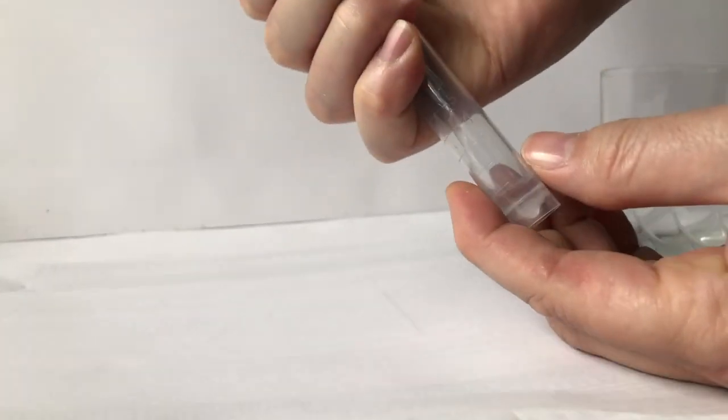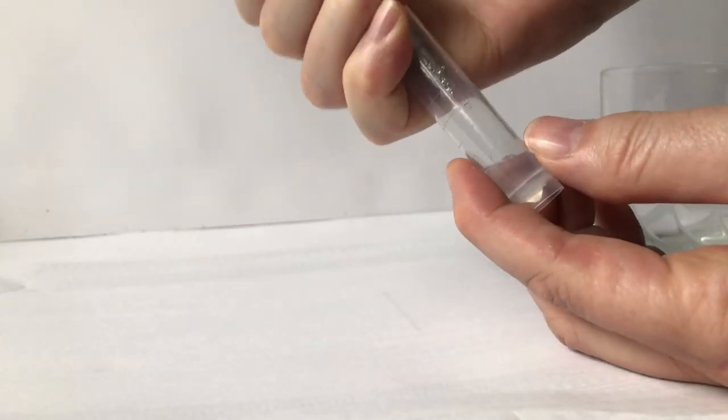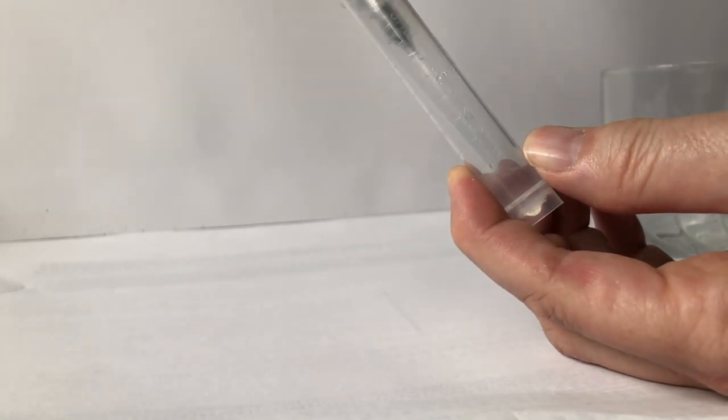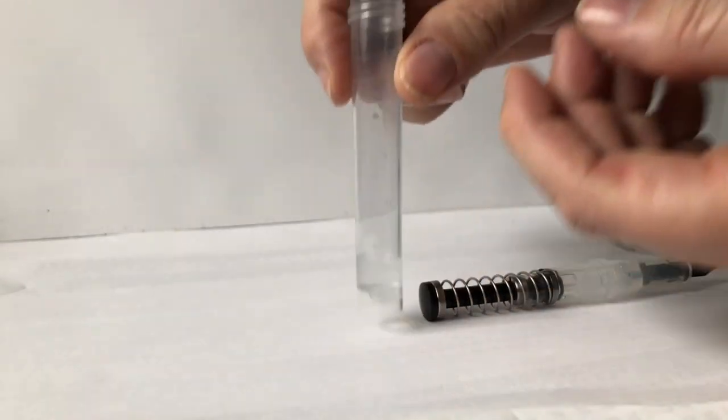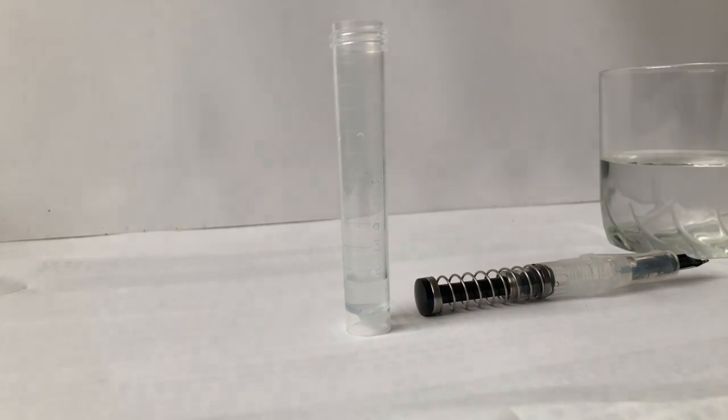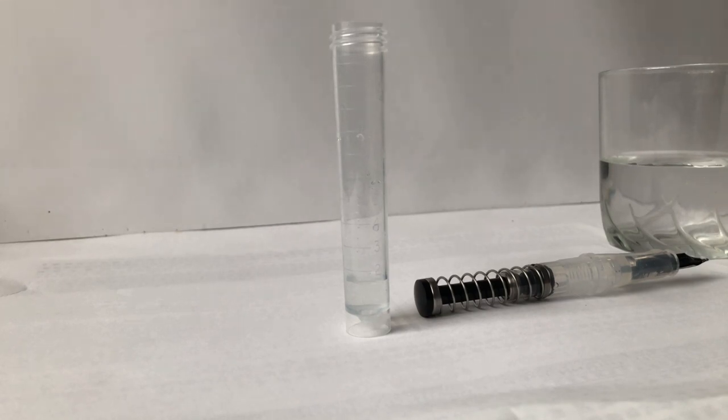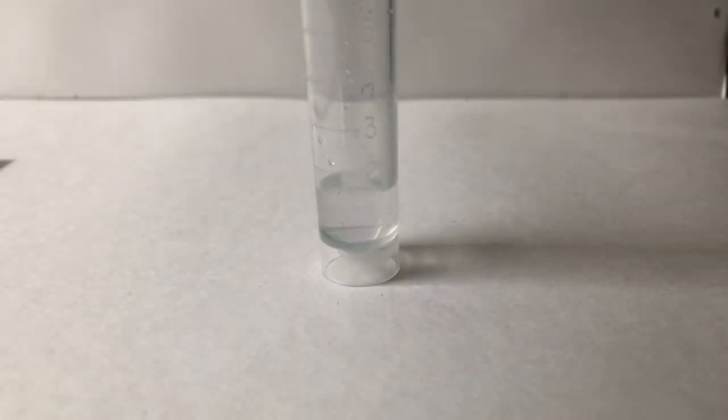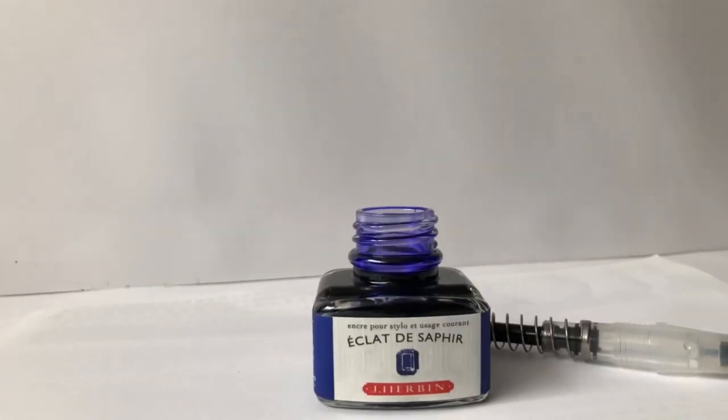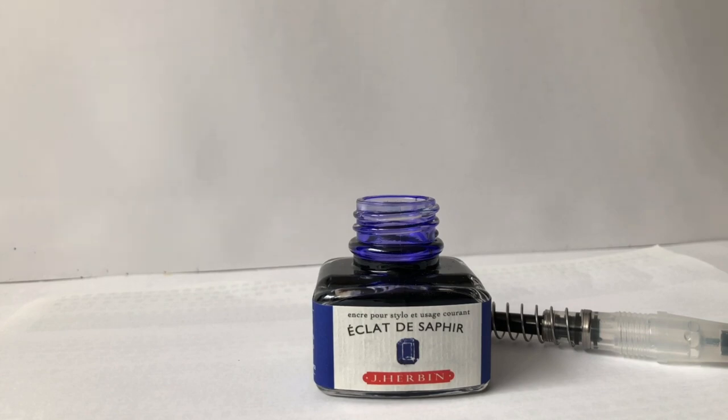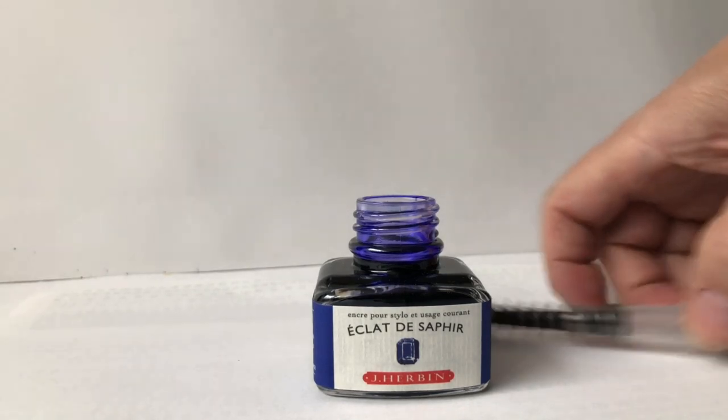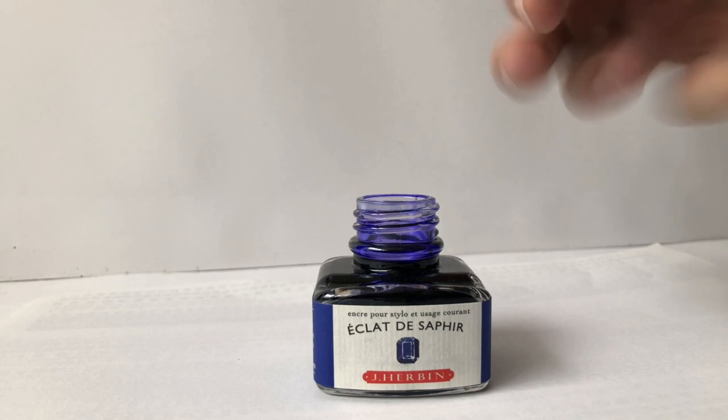No i teraz muszę to tutaj wstrzyknąć do środka i zaraz pokażę, ile to tutaj tego tam jest. Jest kiepsko to widać, jasne na jasnym, ale niecałe 2 mililitry. No 1,6 gdzieś tak wydaje mi się, że to będzie. A więc dość dużo, jak na taką tradycyjną pojemność zwykłych malutkich konwerterów.